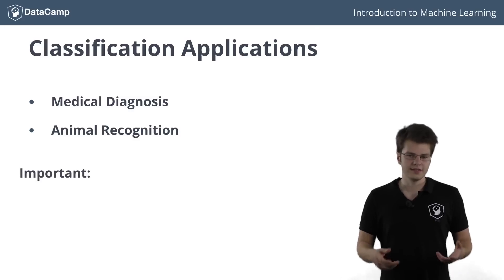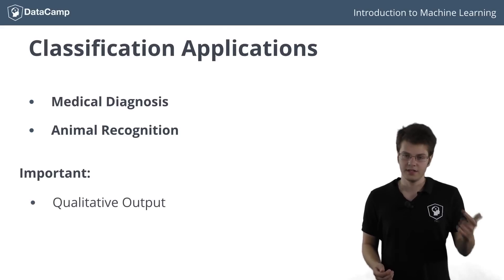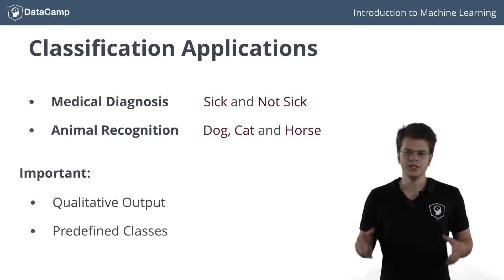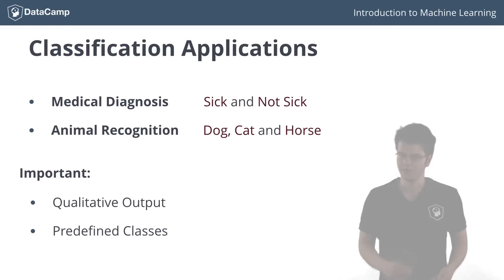What's important here is that first off, the output is qualitative, and second, that the classes to which a new observation can belong are known beforehand. In the first example, the classes are sick and not sick. In the second example, the classes are cat, dog and horse. In chapter 3, we will do a deeper analysis of classification, and you'll get to work with some fancy classifiers.